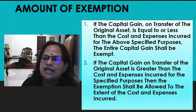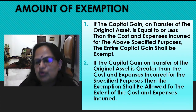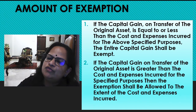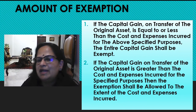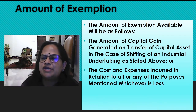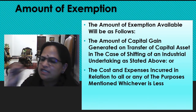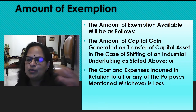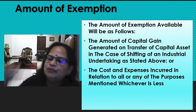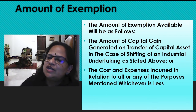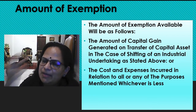The amount of exemption: if the capital gain on transfer of the original asset is greater than the cost and expenses incurred for the specified purpose, exemption shall be allowed to the extent of the cost and expenses incurred. The amount of exemption available will be the amount of capital gain generated on transfer of the capital asset, or the cost and expenses incurred in relation to all or any other purpose mentioned — whichever is less. Whatever new investment made and expenses for shifting, if any balance amount is there, they have to pay the tax.